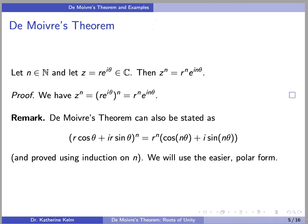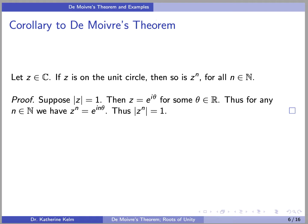It can be proved using induction on n, but it is much harder to prove in rectangular form, so we will use the easier polar form. As a corollary to de Moivre's theorem, if z is on the unit circle, then so is z^n for all positive integers n.